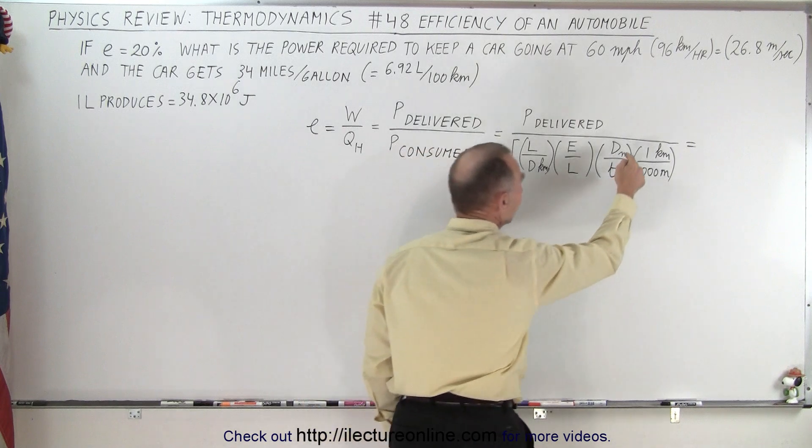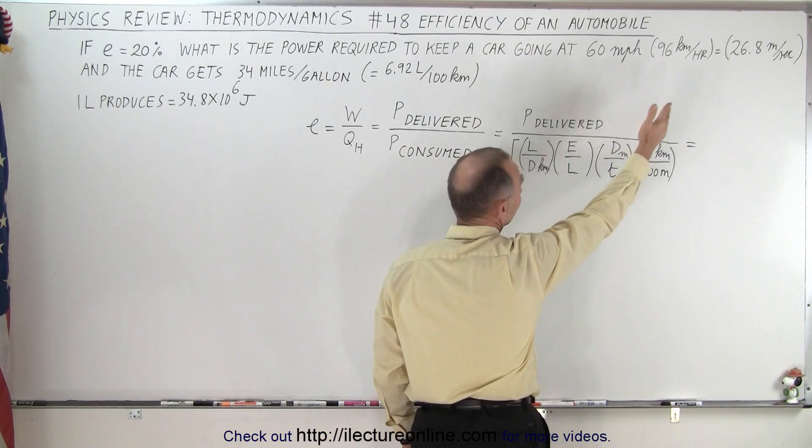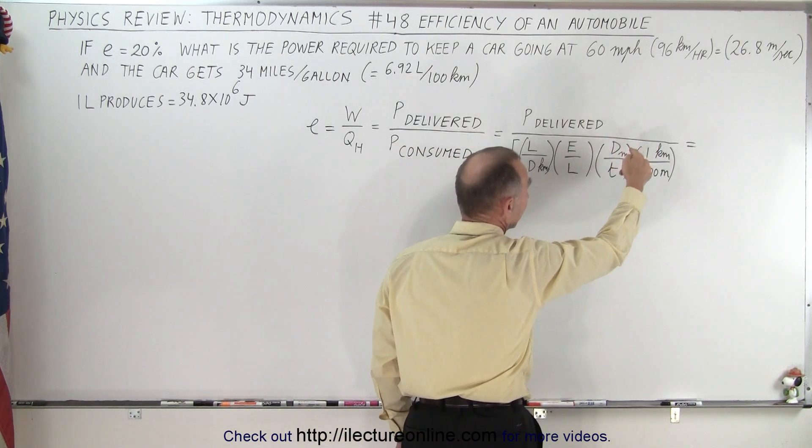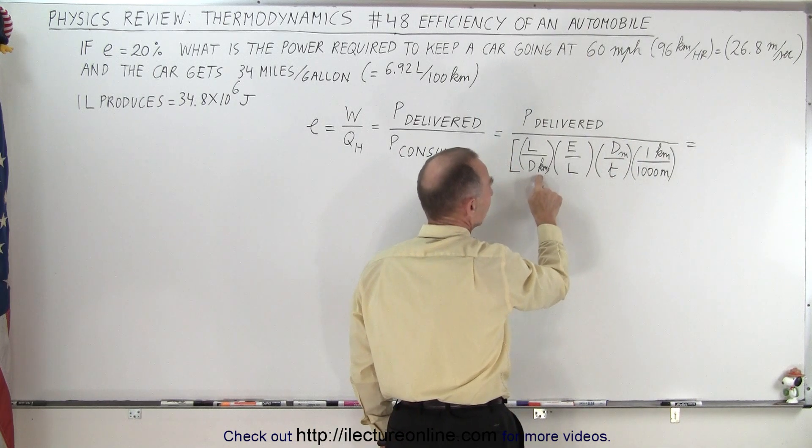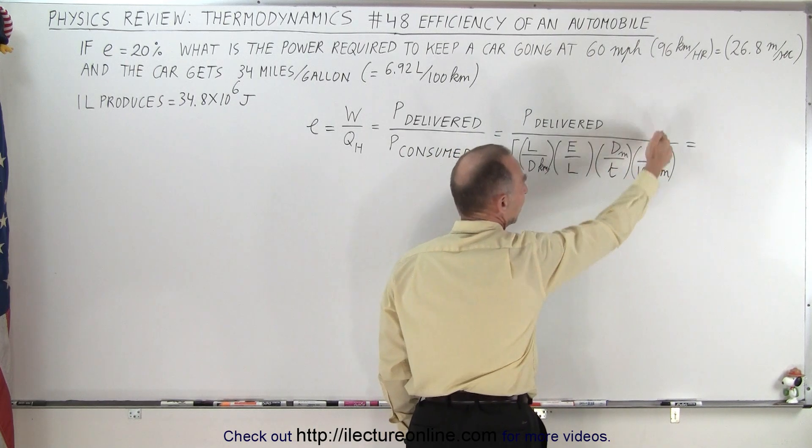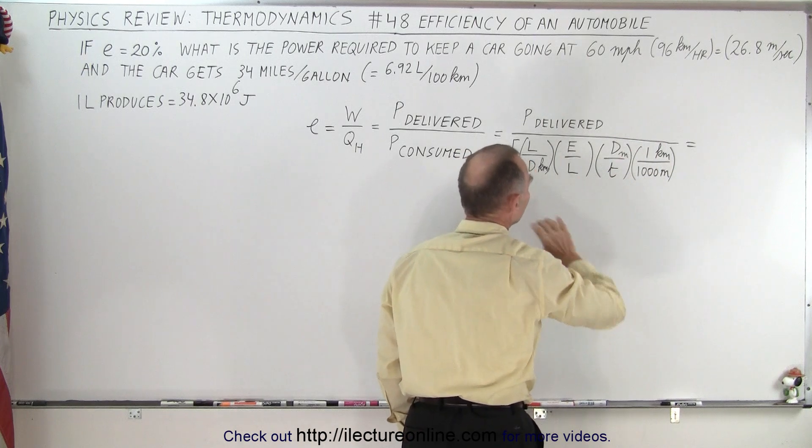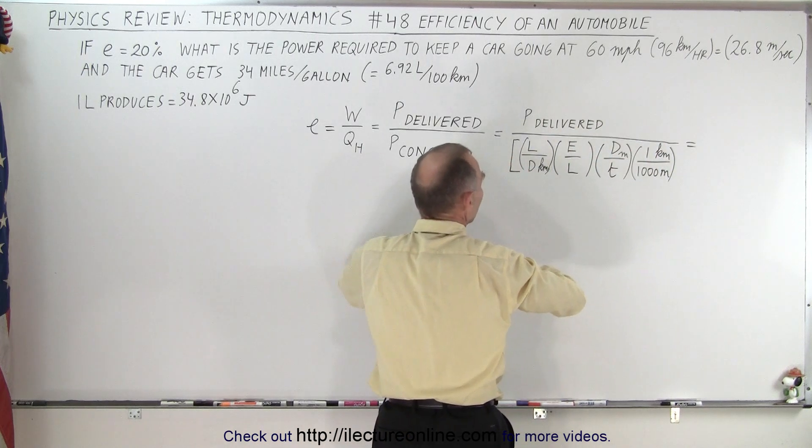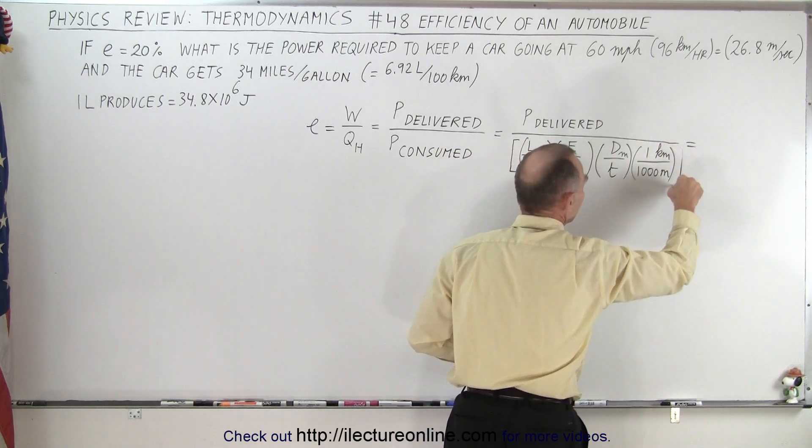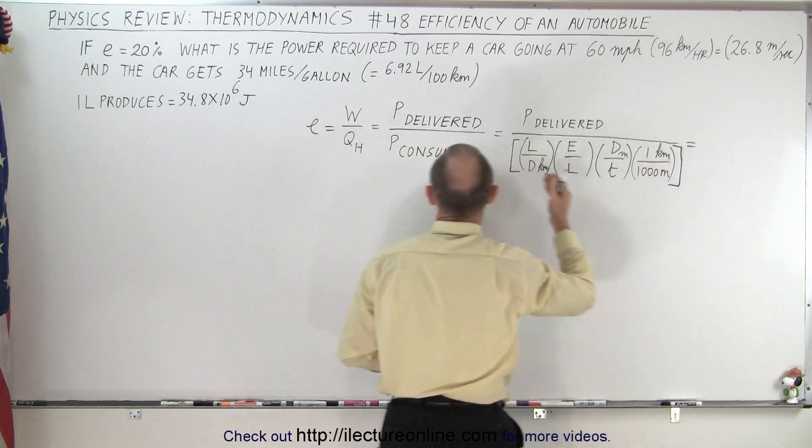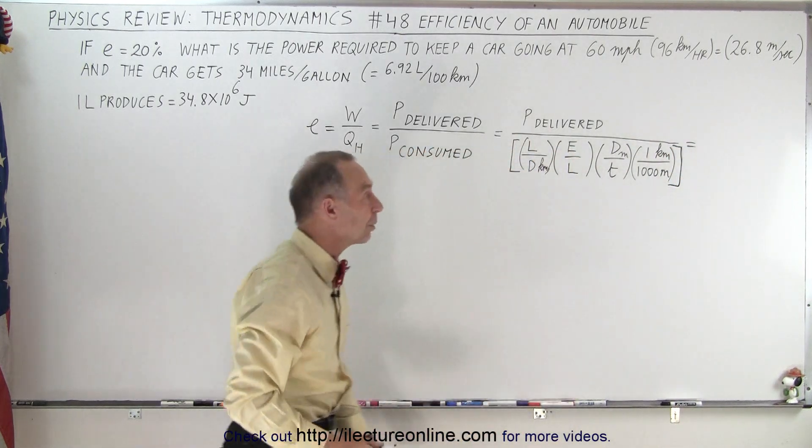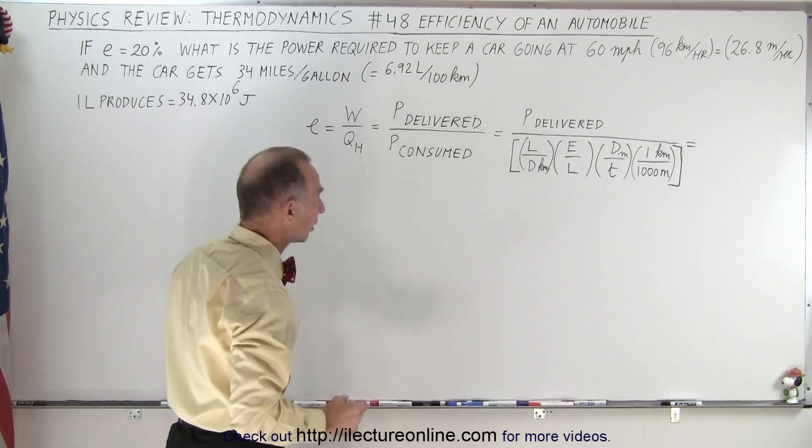We multiply that times distance in meters over time, because we know we're traveling 26.8 meters per second. Of course, we now have to get rid of the kilometers and turn into meters. We have to have the ratio there. So now we have an equation here in the denominator, or at least an expression in the denominator, that tells us how much power is consumed by this automobile, and we want power delivered.